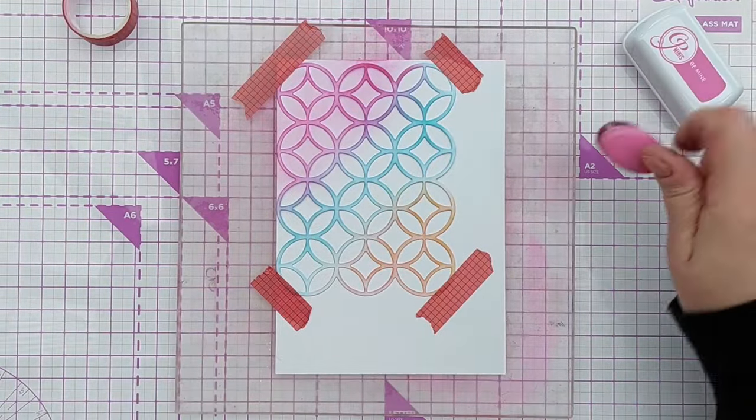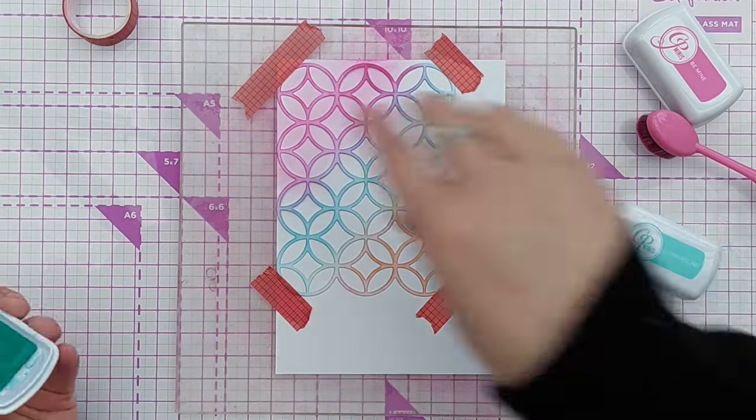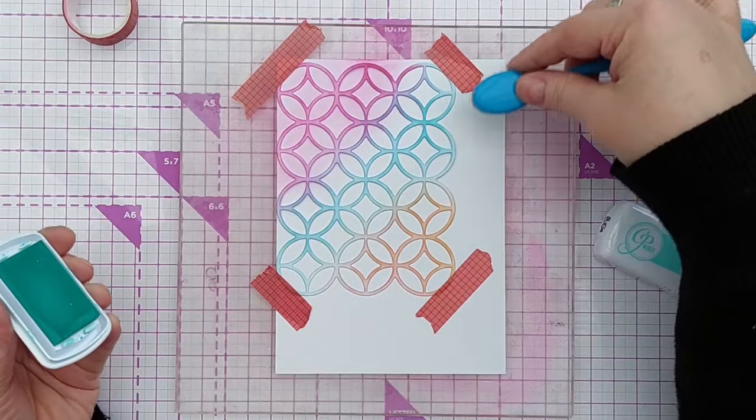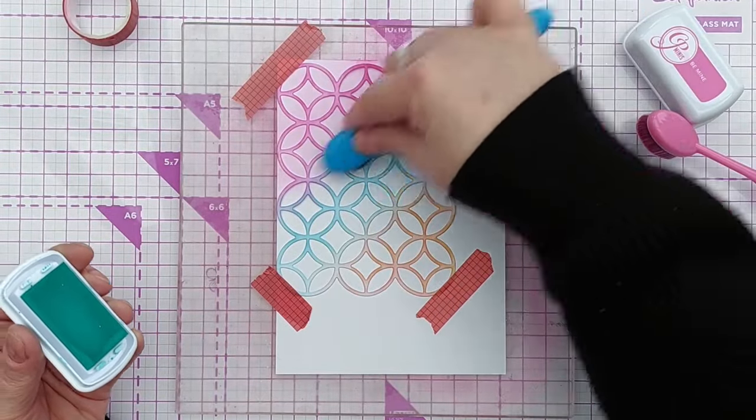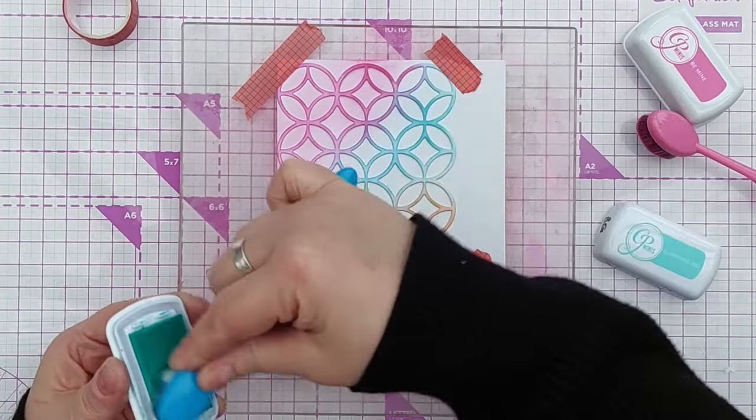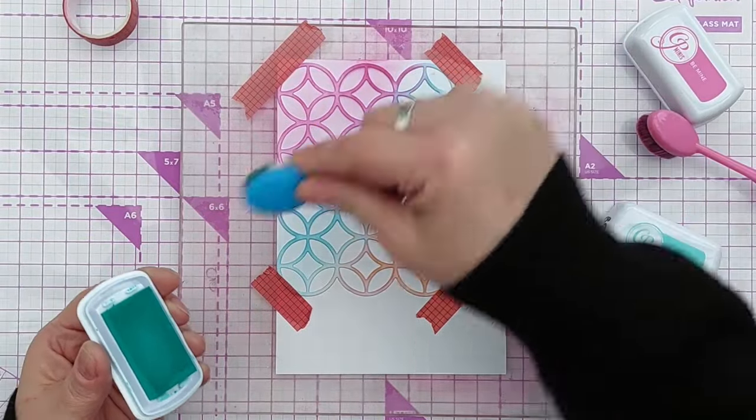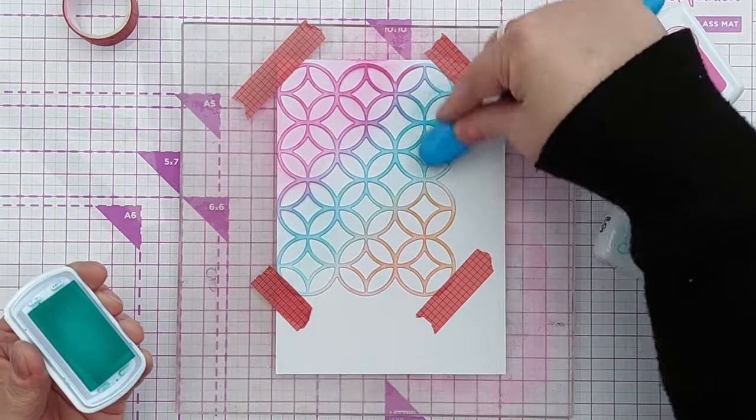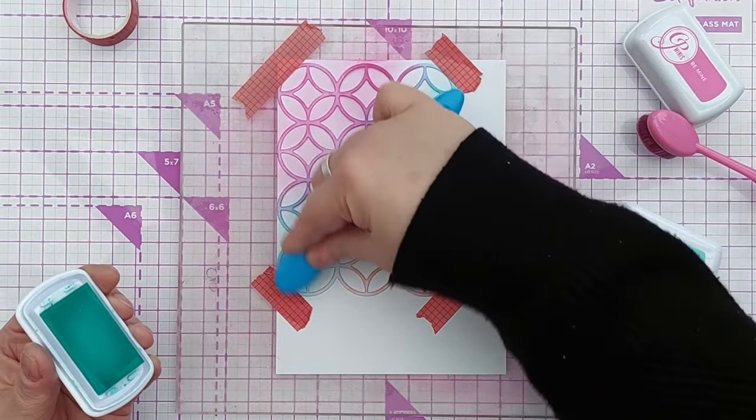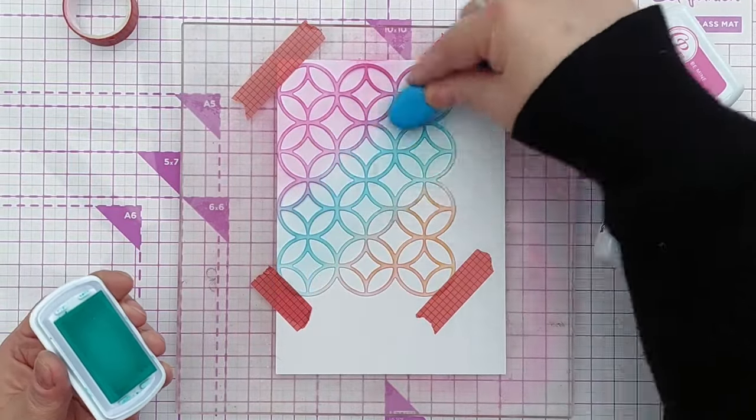I think it's Be Mine, Cummerbund, and Tiara, and these are all from the Catherine Pooler Party Collection. Where I blend each color you should get a secondary color forming, so the pink and blue will make a purplish color, and the blue and orange yellow will make a green color.